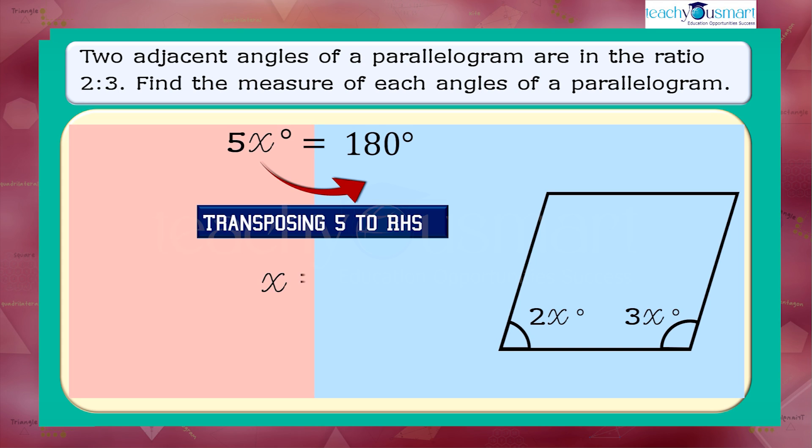Therefore, x equals 180 divided by 5 equals 36 degrees. Now we got the value of x as 36 degrees.